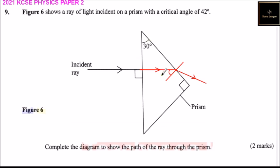This angle is the same as this one. So it is at 30 degrees. And if you complete the diagram like that, you should be able to get two marks.